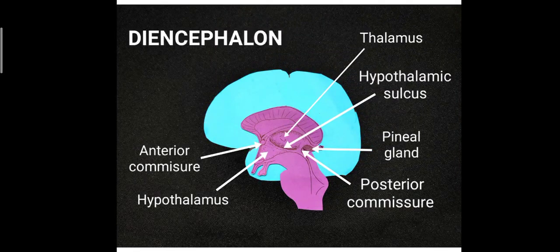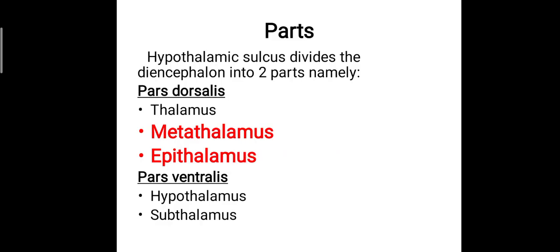Hi everyone, this is Dr. Manu Krishnankai. In our previous class we discussed the classification and structure of the diencephalon parts, and in detail we discussed the anatomical structure of the thalamus. Today we will be discussing the remaining parts of the pars dorsalis, which includes the metathalamus and the epithalamus.